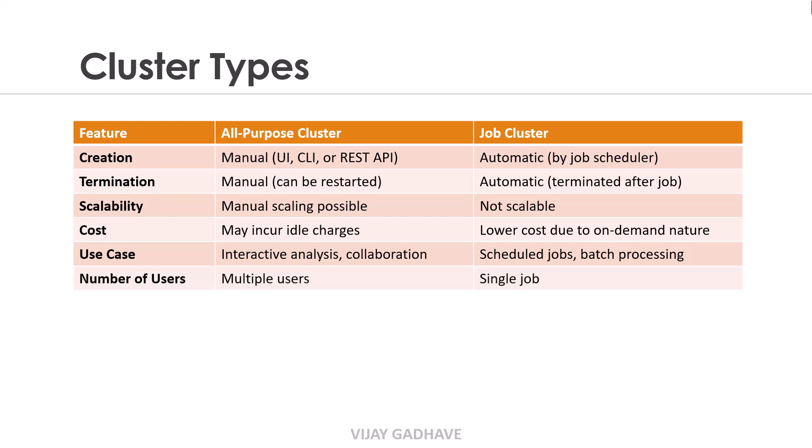The next feature is Number of Users. In the All-Purpose Cluster, multiple users can collaborate simultaneously, making it ideal for team-based tasks. Whereas the Job Cluster is designed for a single job execution, meaning it is optimized for one process at a time.